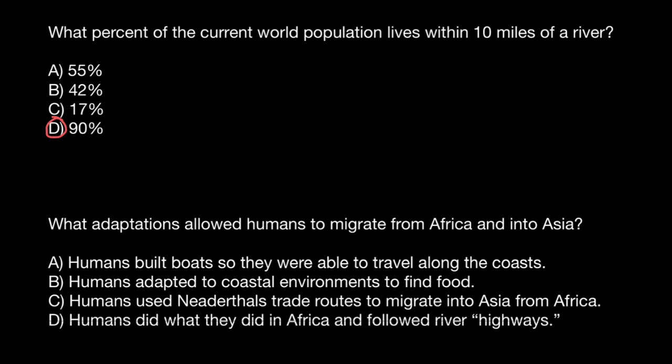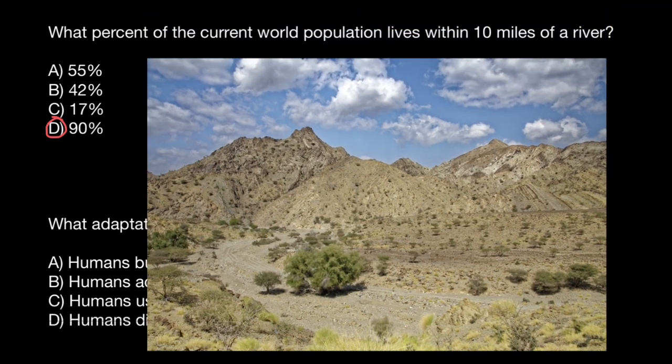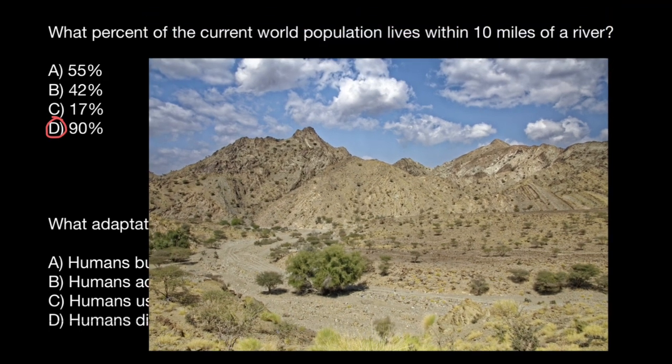In ancient times, humans didn't have the infrastructure we have today to move water — in some locations we can bring water with trucks, in others with pipes. And still, about 90% of the modern population lives within 10 miles from rivers. This tells us that whenever we look for the movement of people and the routes of migration in ancient times, we should look for rivers.